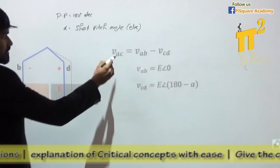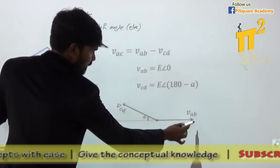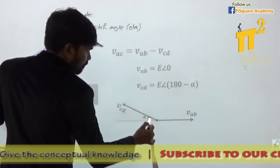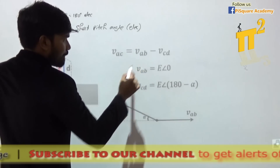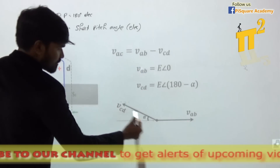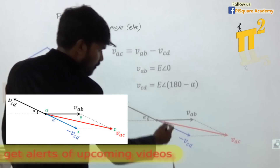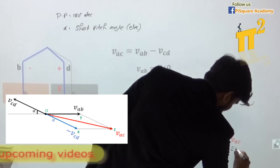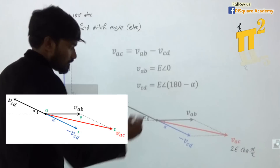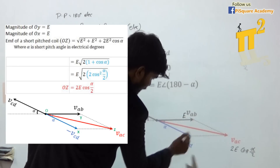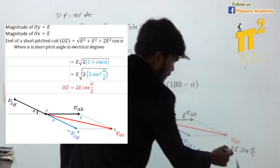Again, for VAC I need VAB and VCD. VAB is at 0° and VCD is at 180 minus alpha. Computing VAB plus (minus VCD) using the parallelogram law, you will get the resultant as 2E cos(α/2). This is because each phasor has magnitude E, and the angle between them gives the cosine factor.